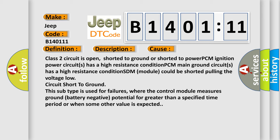Circuit short to ground. This subtype is used for failures where the control module measures ground battery negative potential for greater than a specified time period or when some other value is expected.